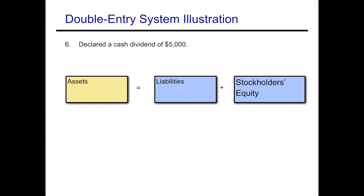Example six: declare a cash dividend of $5,000. We're declaring it — not paying it yet — which means we've officially created a liability for ourselves. Therefore, liabilities have increased by $5,000. Also, when we pay out stockholders, that decreases their equity or their ownership claim on our assets. So liabilities increase and equity decreases, keeping the accounting equation in balance.